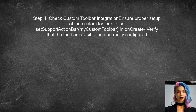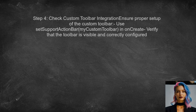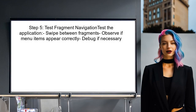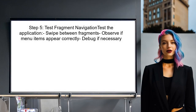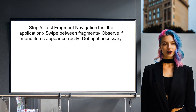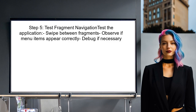You can try using the default action bar to see if the issue persists. Finally, if the problem continues, test the application by switching between fragments to see if the menu items appear as expected. This will help identify if the issue is related to the fragment lifecycle or the view pager setup.